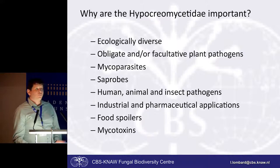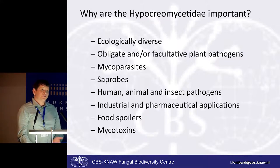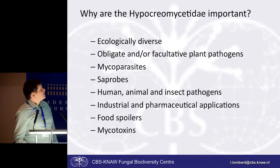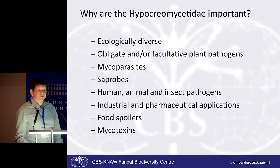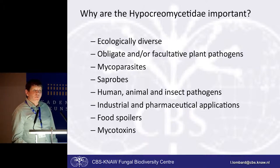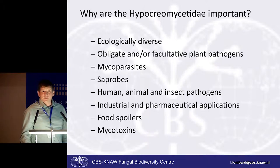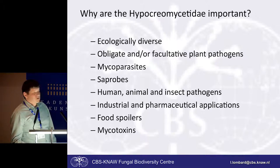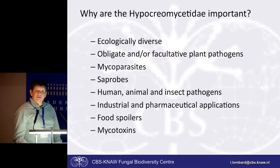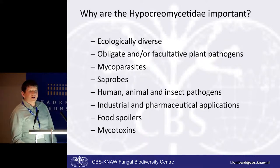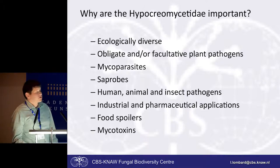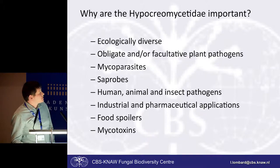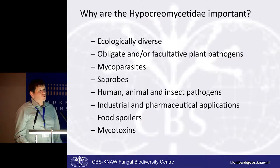So why are these fungi so important? They're ecologically diverse, occurring in both terrestrial and aquatic environments, and some in extreme environments as well. Most of our well-known plant pathogens are classified in this subclass. Several are mycoparasites and have been used as biological control agents. The majority are saprobes. Several are human, animal, and insect pathogens. Several have been used in industrial and pharmaceutical applications, for example for the production of biofuels and antibiotics. Some are food spoilers, including post-harvest and processed foods. And a large number of them produce very important mycotoxins.